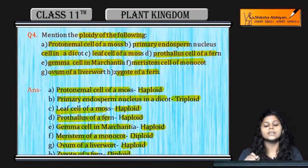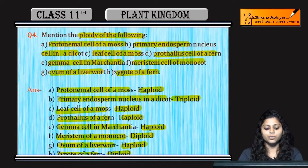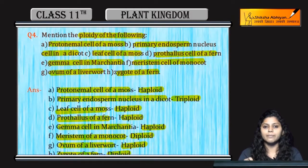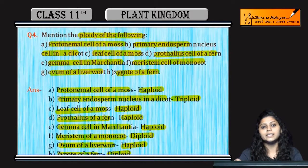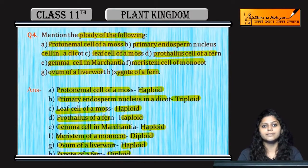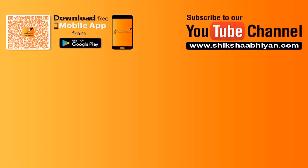So, these are the ploidies of the different cells: protonema cells of mosses, primary endosperm, prothallus, leaf cell of mosses, meristem cell of monocot, and zygote of a fern.